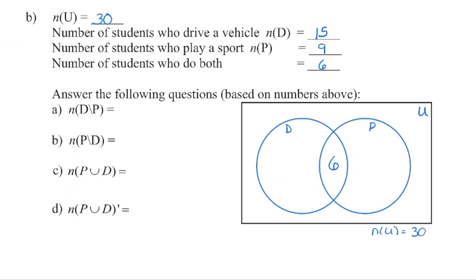Always begin in the middle if possible. The six students who both drive and play a sport go in the intersection. Now, the entire drive-a-vehicle circle must contain 15 students total. We already have six in there, so 15 minus 6 means there are nine students who drive but don't play a sport.